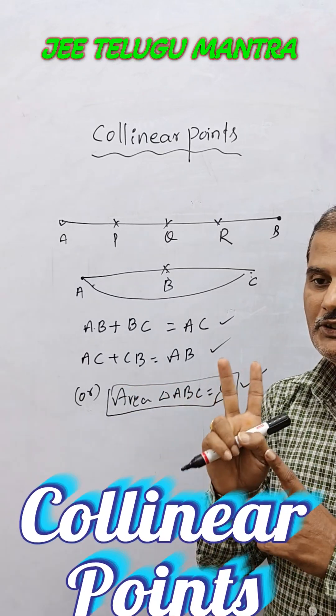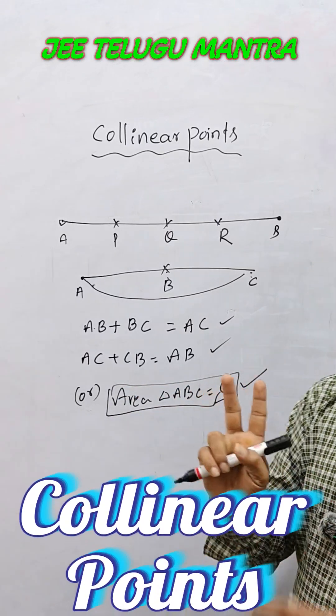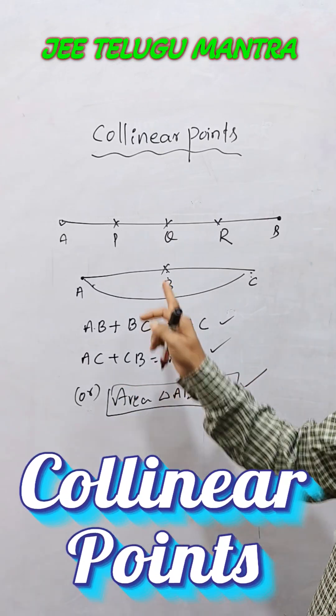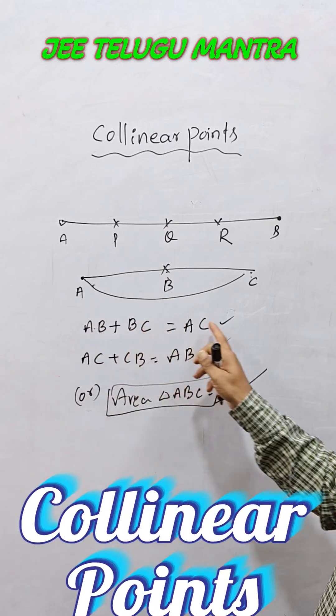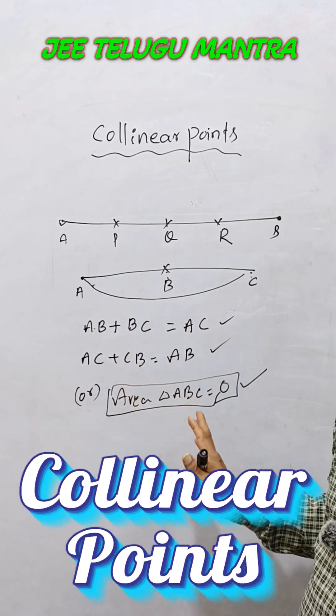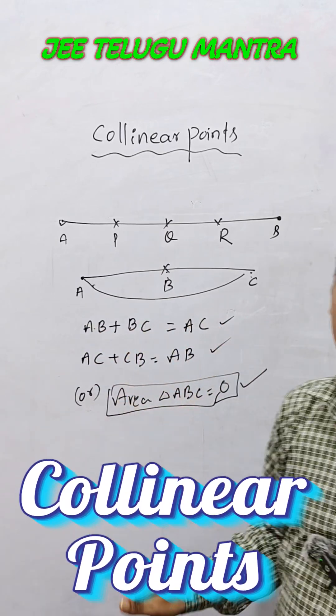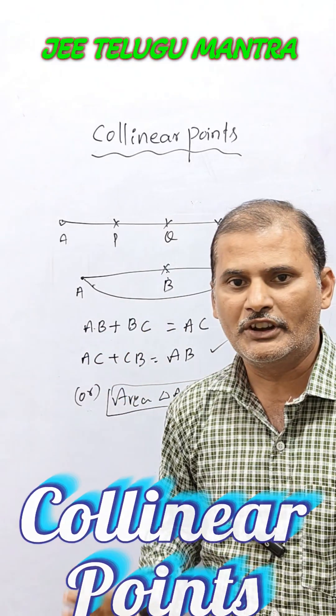Therefore, collinear points can be shown in two ways. One is AB plus BC is equal to AC. Another one is area of triangle ABC is equal to zero. This is about collinear points.